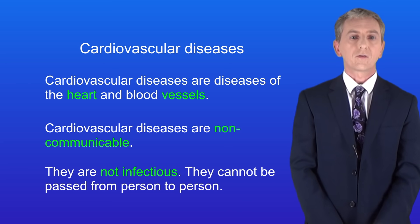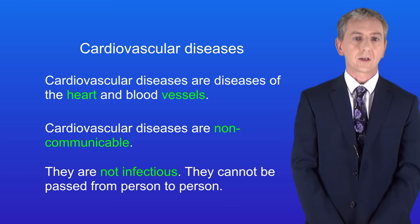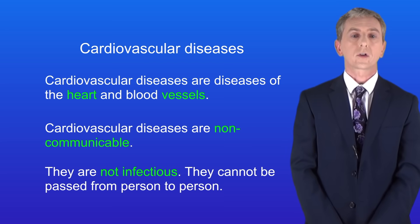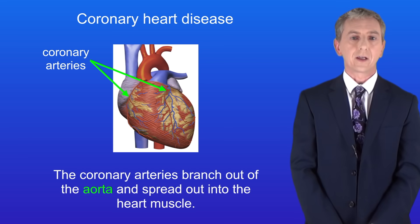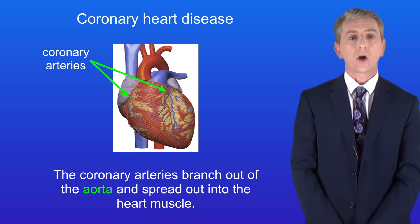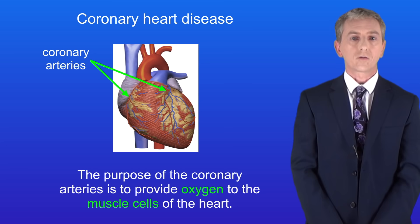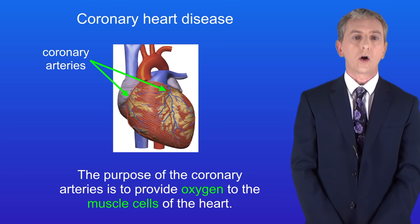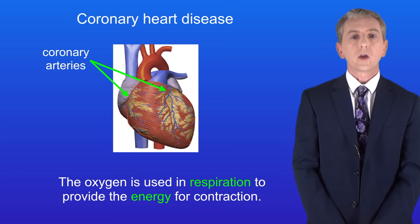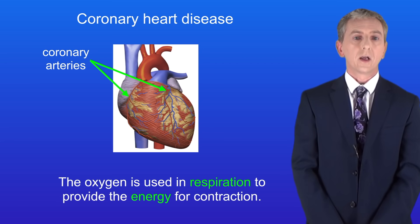A good example of a cardiovascular disease is coronary heart disease. In an earlier video we saw that the coronary arteries branch out of the aorta and spread out into the heart muscle. The purpose of the coronary arteries is to provide oxygen to the muscle cells of the heart, which is then used in respiration to provide the energy for contraction.